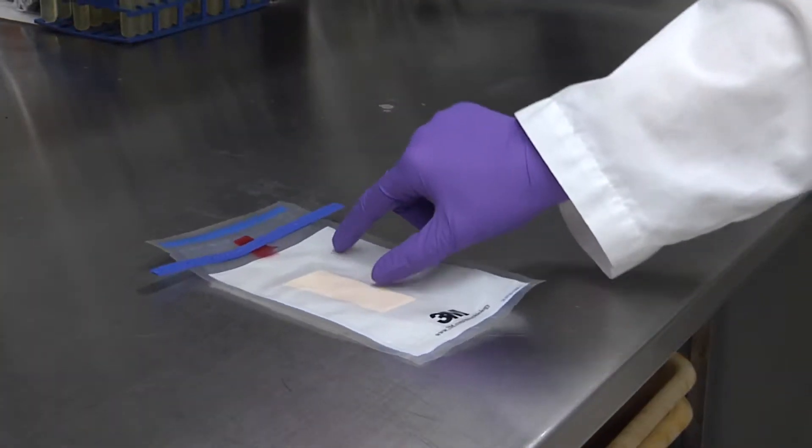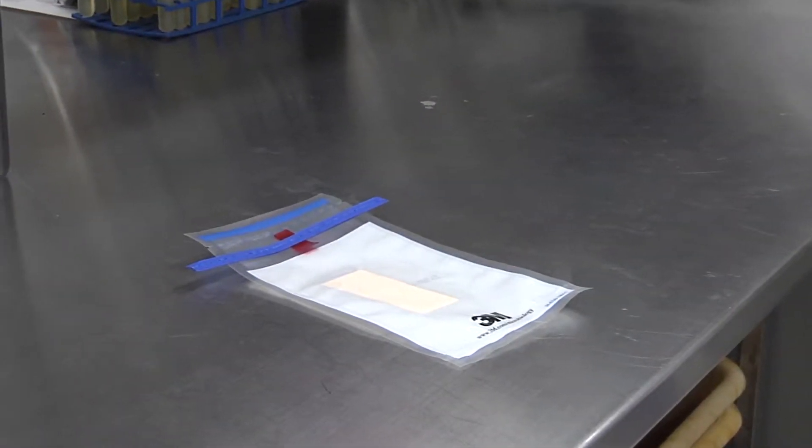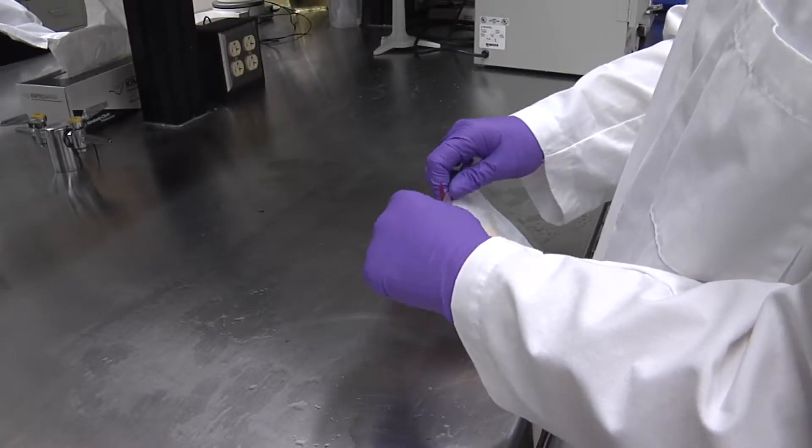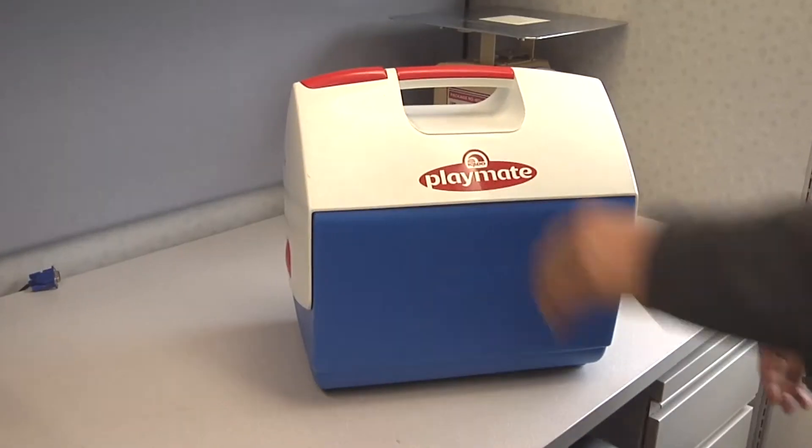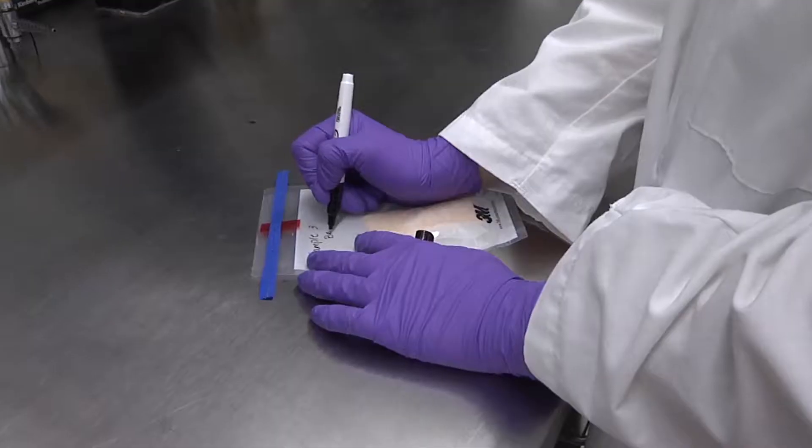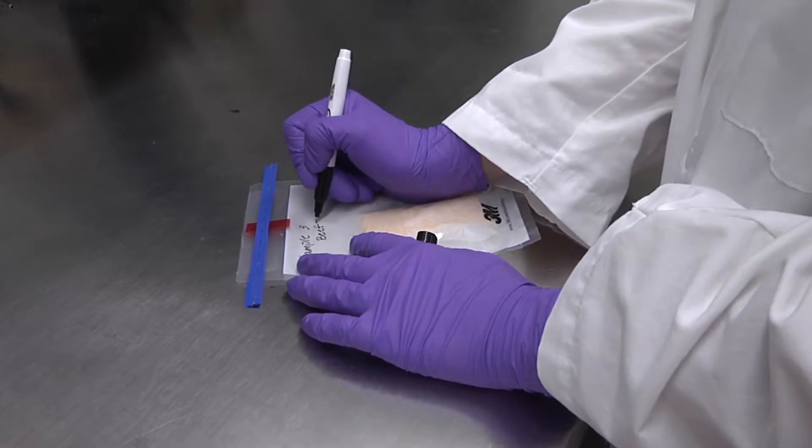For sponge testing, you will need a sterile, pre-moistened sponge, a pair of sterile gloves, and a cooler for transport. A marker is also needed for marking the sponge bags.